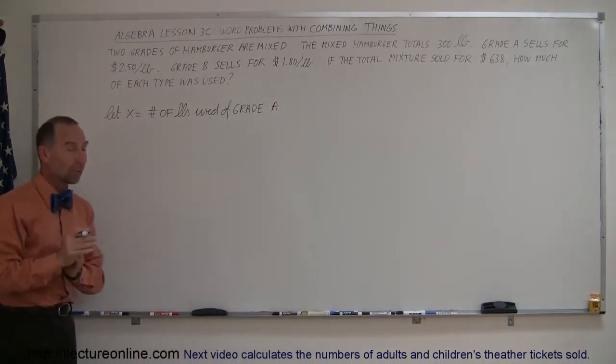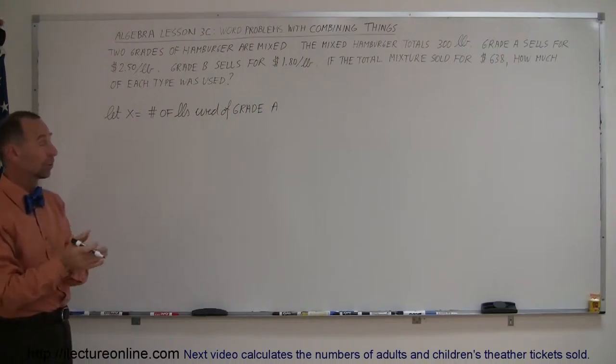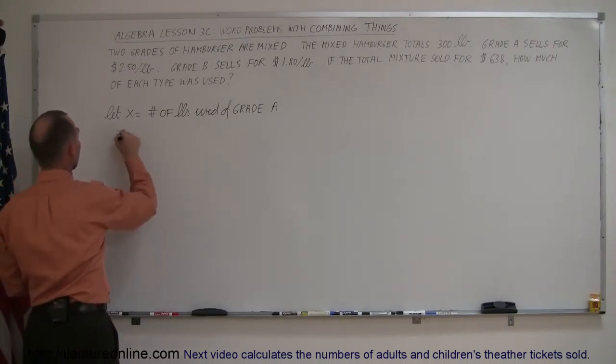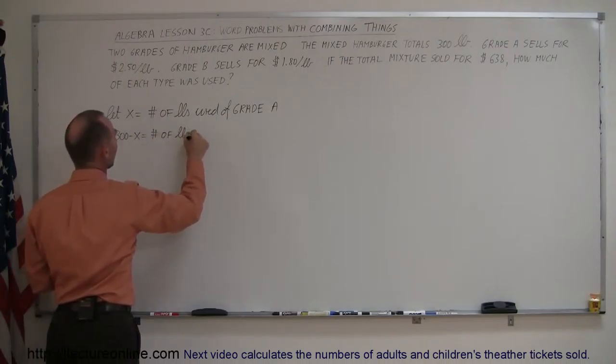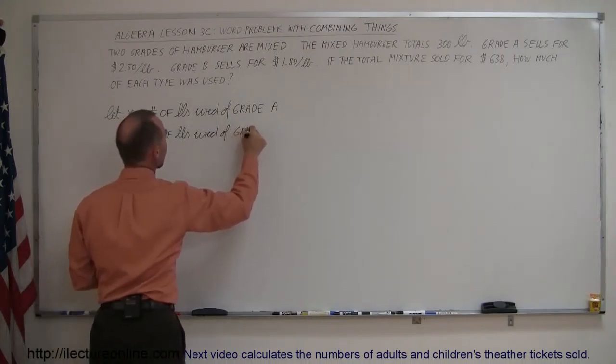X represents the number of pounds used of grade A hamburger. Now, how do we express the amount of pounds used for grade B hamburger? Well, if the total is 300 and we use X for grade A, then 300 minus X is the amount for grade B. So, 300 minus X is the number of pounds used of grade B.